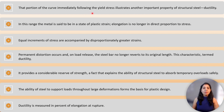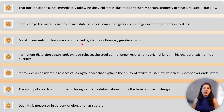The portion of the curve immediately following yield stress illustrates another important property of structural steel called ductility. In this range, the metal is said to be in the state of plastic strain. Elongation is no longer in direct proportion to stress — equal increments of stress are accompanied by disproportionately greater strains. Permanent distortion occurs and, on load release, the steel bar no longer returns to its original length.